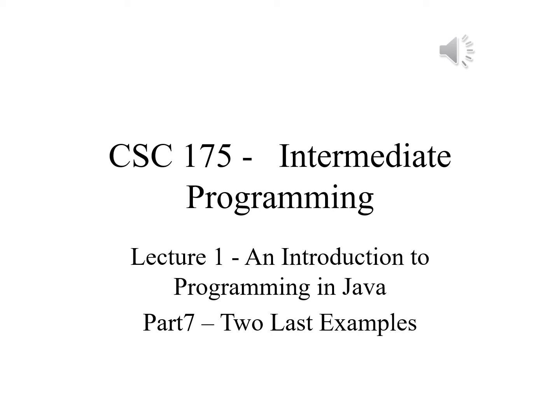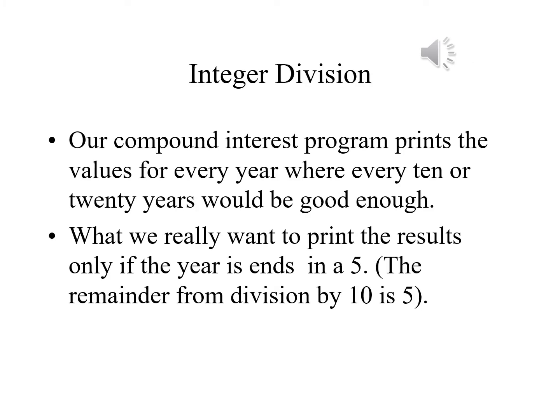In part seven of lecture one we will see two last examples. The compound interest program that we've written is still going to print the data for every year for over a period of close to 400 years. That's a lot of data, most of which we don't really care about. Having the data for every 10th year or every 20th year would be more than good enough.